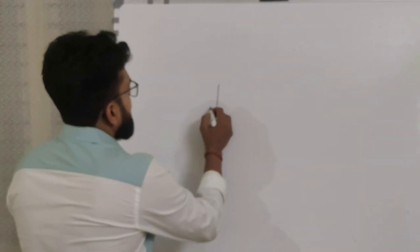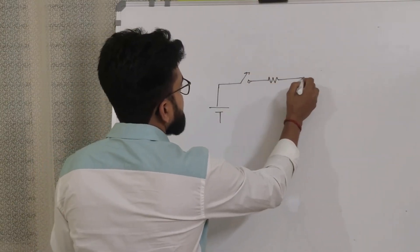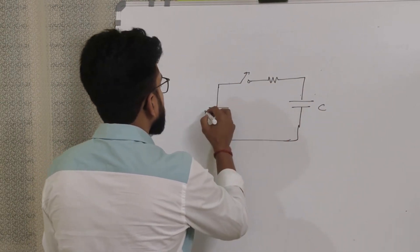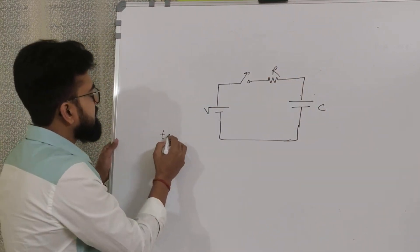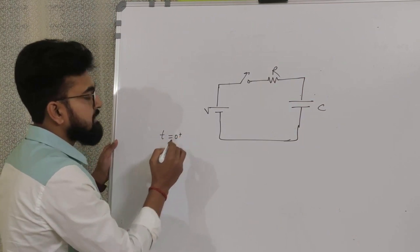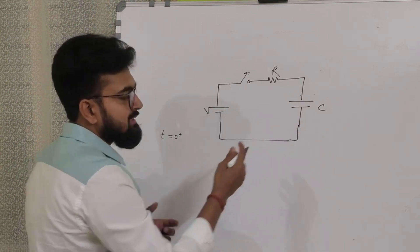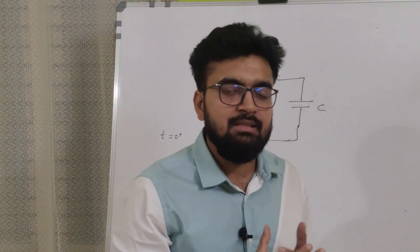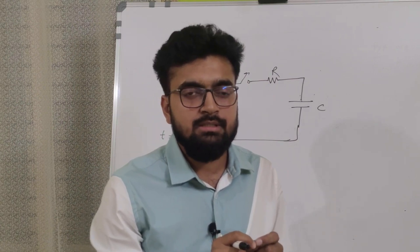Let's begin with a simple RC circuit with a voltage source, a resistor, and a capacitor in series. At time t equals 0, right after closing the switch — at t equals 0 plus — the capacitor will behave like a short circuit.